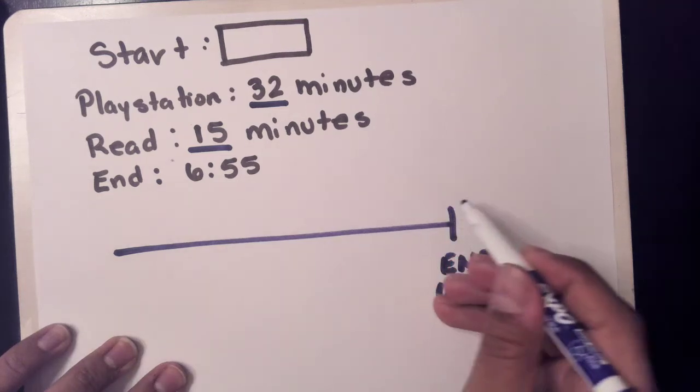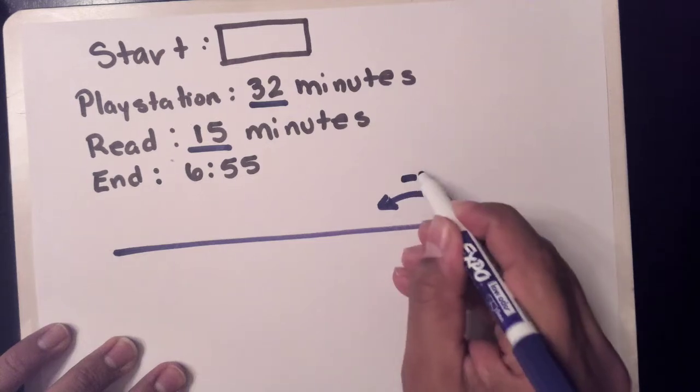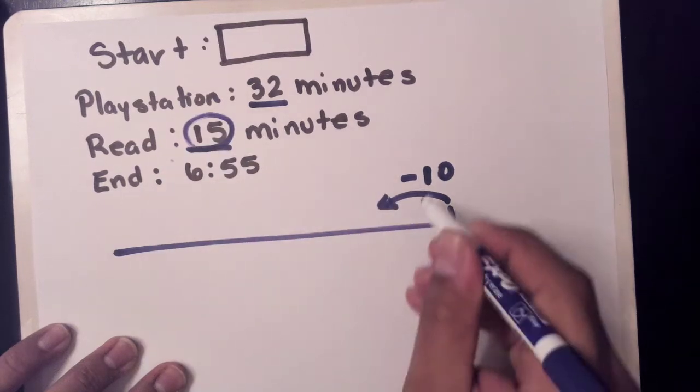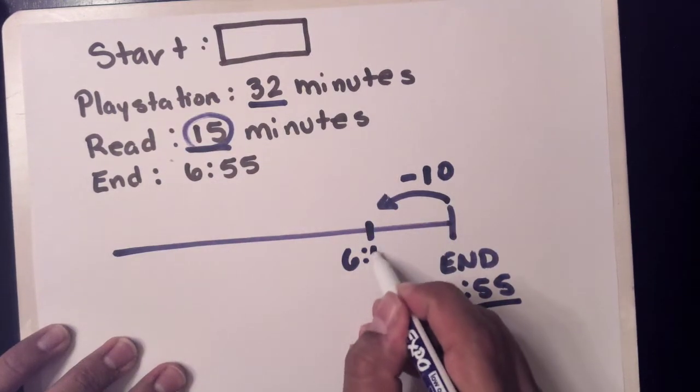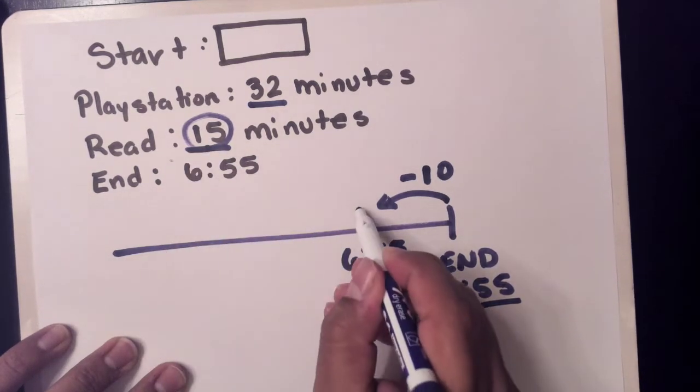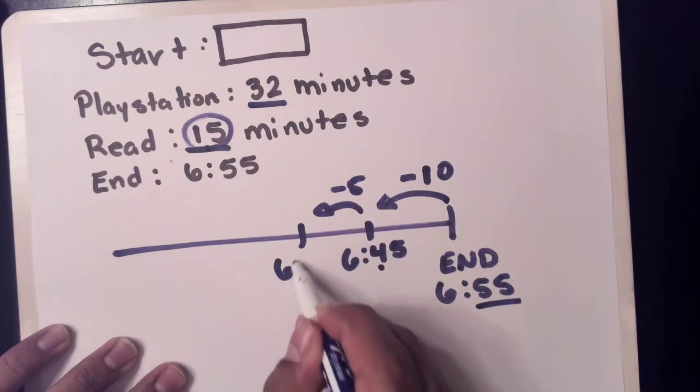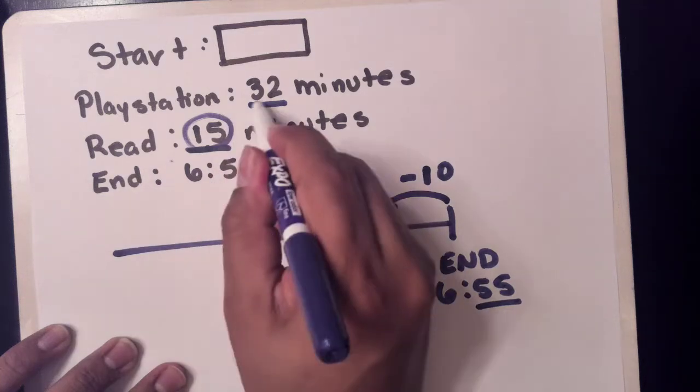So you start taking away, and it's up to you. I'm going to first take away 15 minutes. So 6:55 minus 10 is 6:45, minus 5 is 6:40.